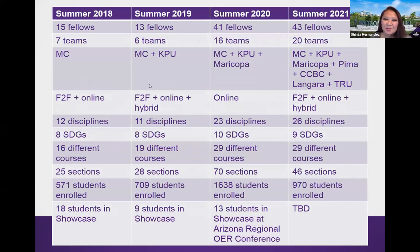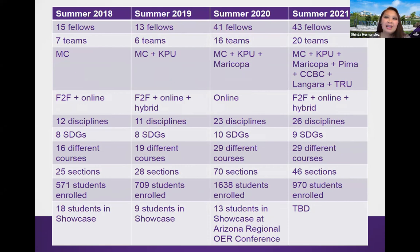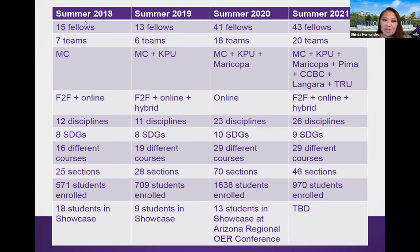Over the course of four summers, you can see the growth in the number of fellows we've had over time. We're especially proud of this increase and can't wait to see what summer 2022 will look like. Our faculty are paired in teams that are interdisciplinary and inter-institutional across seven institutional partners. The number of disciplines covered has grown from 11 to 12 disciplines in the beginning to now 26 disciplines. More courses in which these renewable assignments are being deployed — 29 different courses as opposed to 16 when we first started.